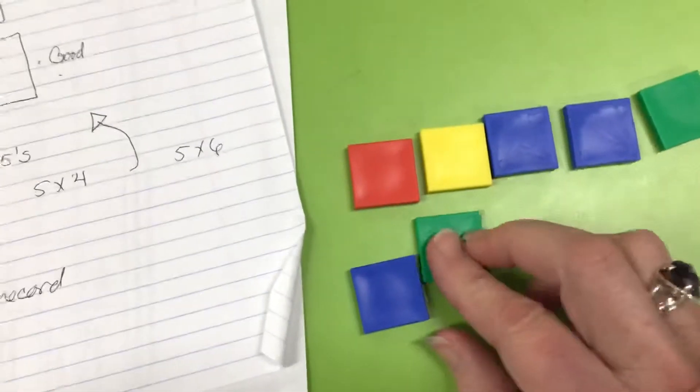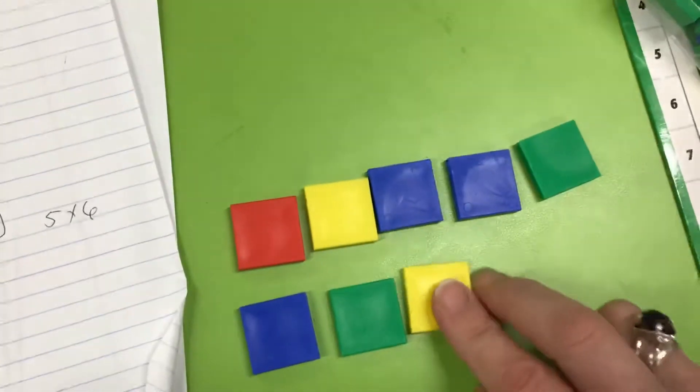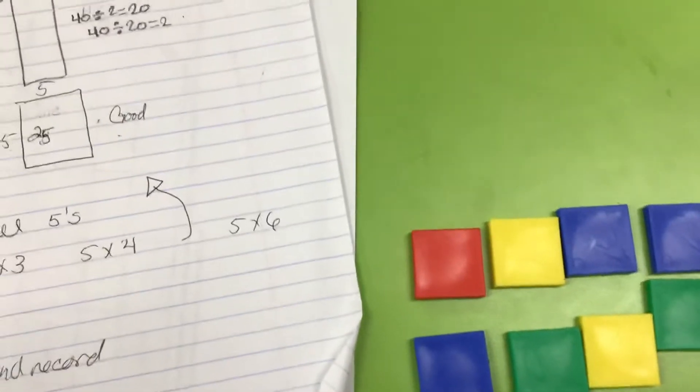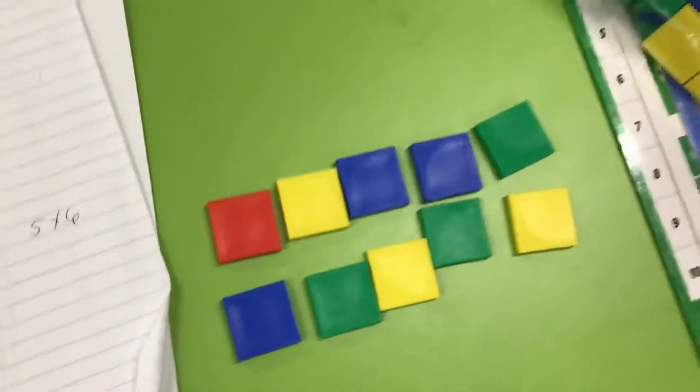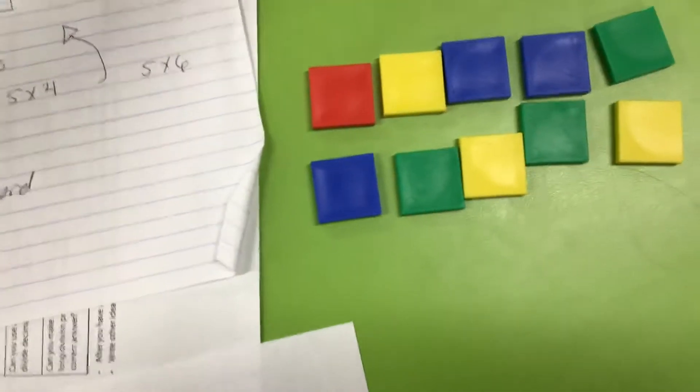5. So I need 5 rows of 5 to fit into those 5 columns. So I'm going to go ahead and do this. Hold this still as I build with my other hand. Sorry, this is slow.